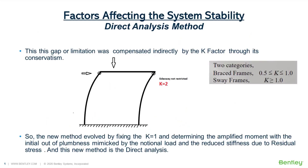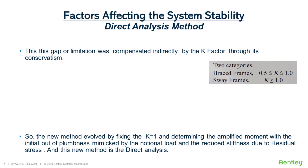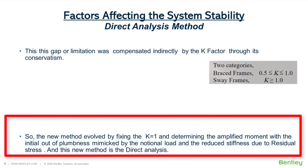In ELM, we are decreasing capacity due to sidesway by using K = 2, and also amplifying the required moment due to sidesway by doing second-order analysis — which is conservative and not the real practice to capture actual structural behavior. Post-2005, K was set to unity. As buckling is not real and not dependent on initial imperfection, whereas the response from second-order analysis considering initial imperfection is always real and practical, the new method evolved by fixing K = 1 and calculating the amplified moment by second-order analysis with initial out-of-plumbness mimicked by notional load and reduced stiffness due to residual stress. This new method is known as direct analysis.